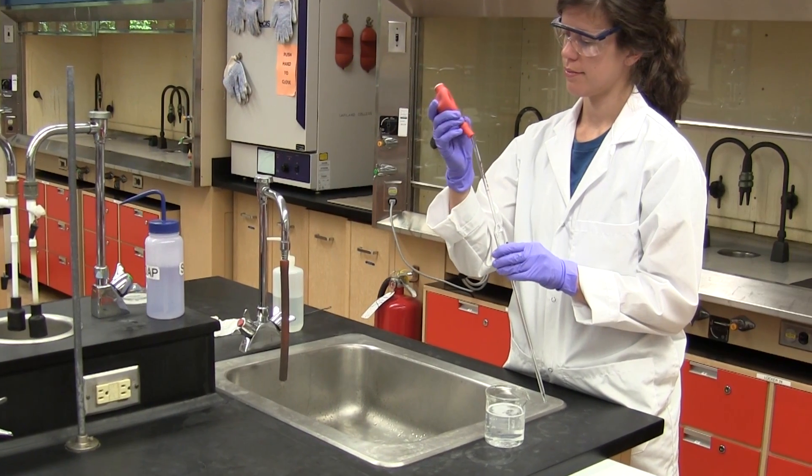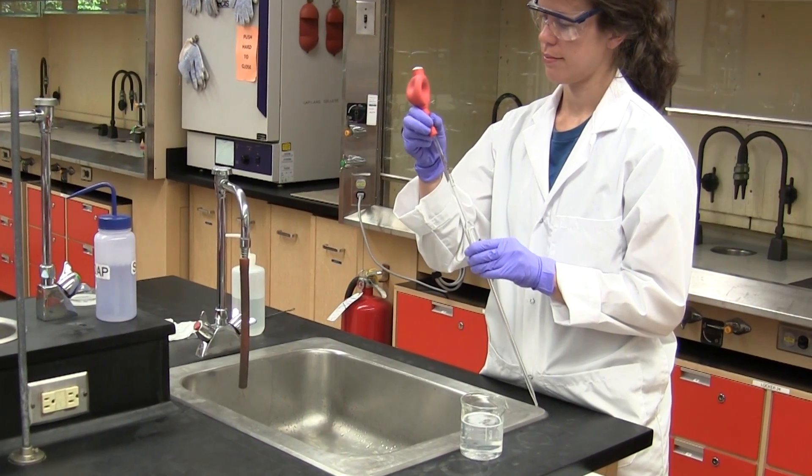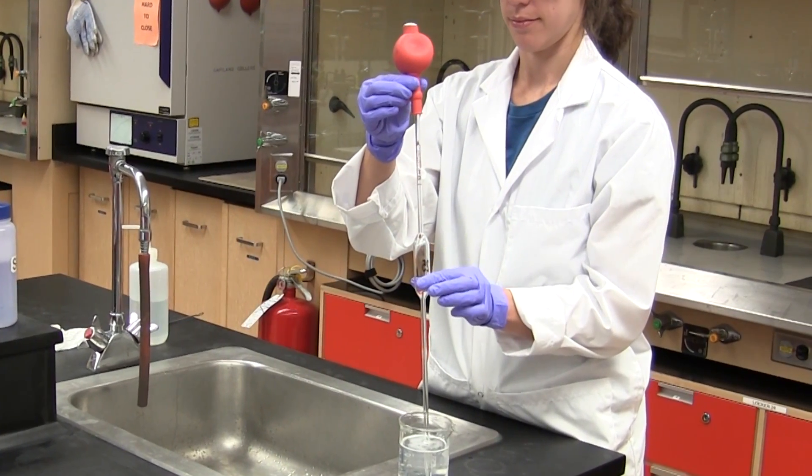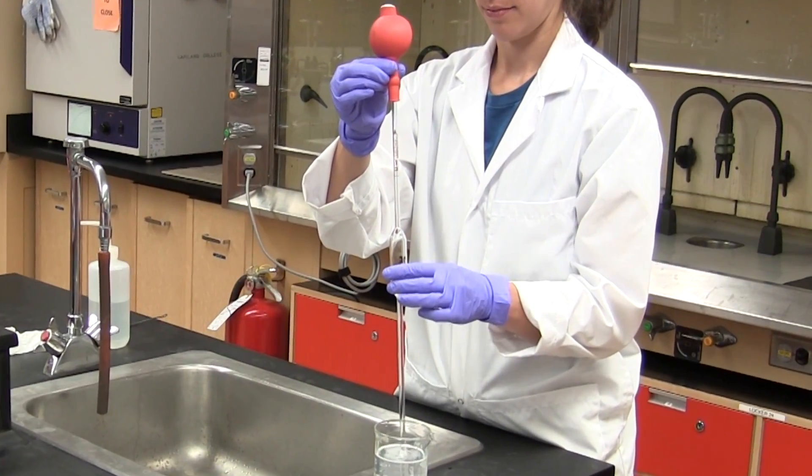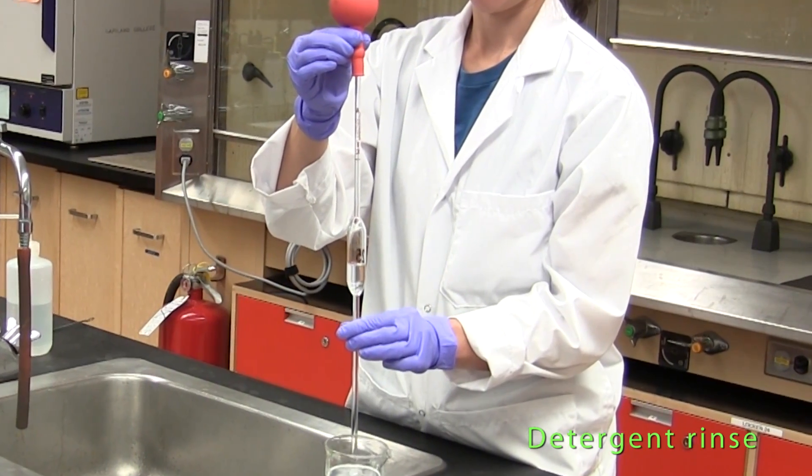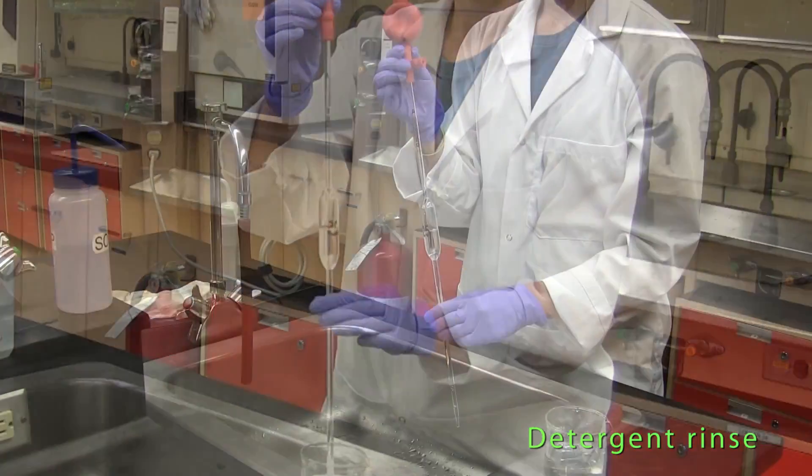Before the pipette is used to make a precise transfer of liquid it must first be cleaned. The tip of the pipette is immersed in some hot detergent solution and the liquid is pulled up into the pipette by using a pipette filler until the bulb of the pipette is about half full.